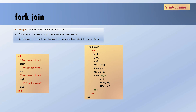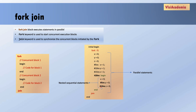Fork-join allows us to run multiple blocks of code concurrently and then synchronize them using join to ensure all concurrently executing blocks have completed before moving on. Here inside an initial begin-end I have defined a fork-join block, inside which I am initializing variables x, y, z. At time 0 I am initializing x, y, z to 0, and at different times I am again initializing them to 1. I have also added a begin-end inside the fork-join, where statements execute sequentially.